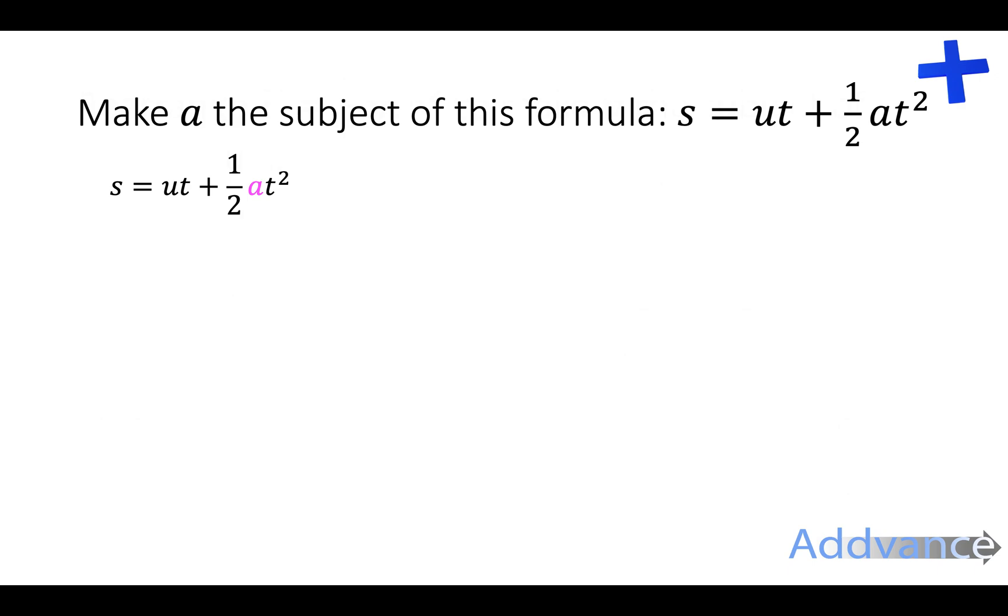Let's see another example here. s equals ut plus half at squared. And I want to make a the subject of the formula. I've highlighted the a here to make it easier. The first thing we do is get rid of the plus ut. The ut is adding to this side. So you go to subtract it from that side and subtract it from the other side. And we get s minus ut equals half at squared.